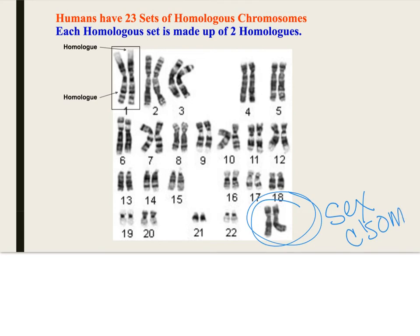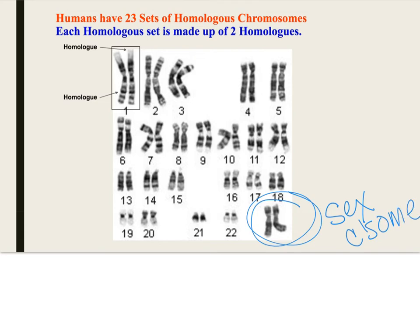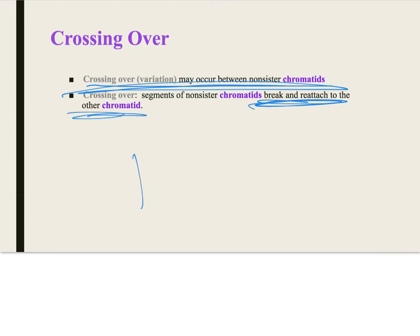Here's why this is important: crossing over. So crossing over happens when they're in that tetrad. The chromatids touch and DNA is moved, DNA sequences are moved. They break and they reattach. This is where genetic variation comes from. This is why we do not look identical to our siblings, unless of course you're identical twins.